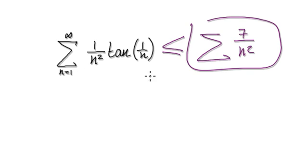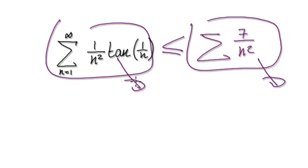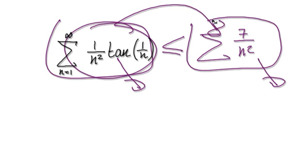Well, this thing here will always be greater than or equal to this thing. If this thing converges, therefore this thing must converge. But let's try and understand how we got from here to here.